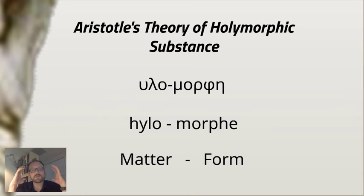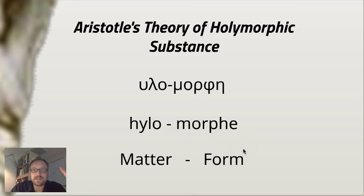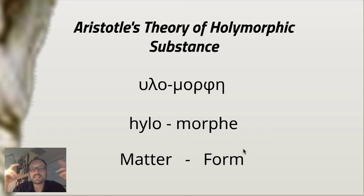Let me start with some general terminology. Aristotle's theory of substance is known as hylomorphic substance. 'Hylo' comes from the Greek term meaning something like matter — originally it meant wood. 'Morphe' is the term Aristotle uses when he talks about form. This is different from Plato's conception of eidos; for Aristotle, eidos is actually used for what we'd call species.